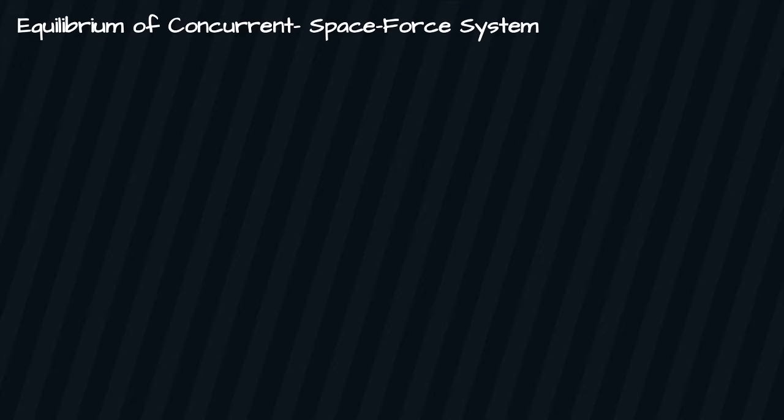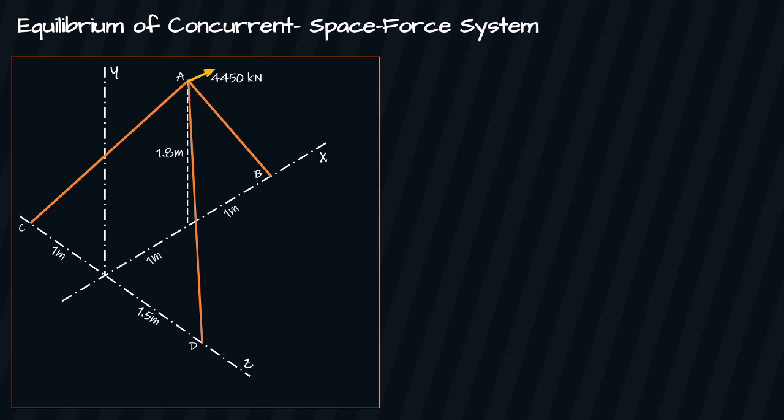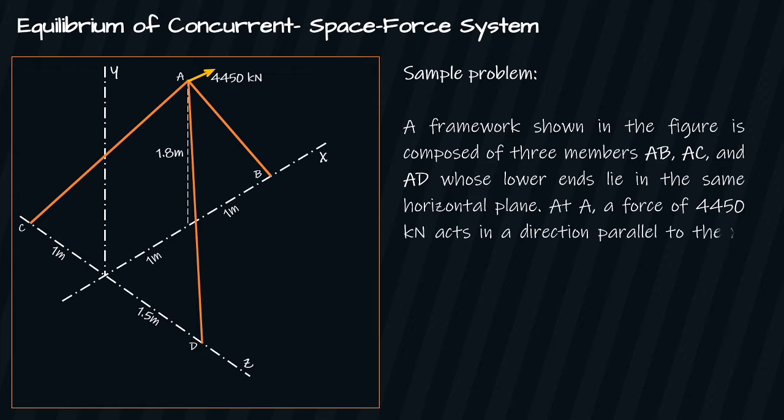Let's try to solve an equilibrium of concurrent space force system problem. Given a three-dimensional axis, the x, y, and z axis. A framework shown in the figure is composed of three members AB, AC, and AD, whose lower ends lie on the same horizontal plane at A.